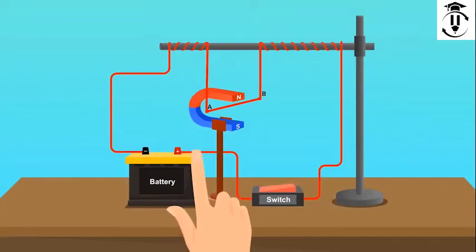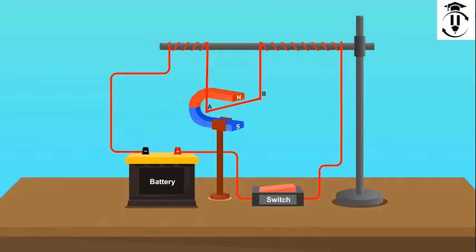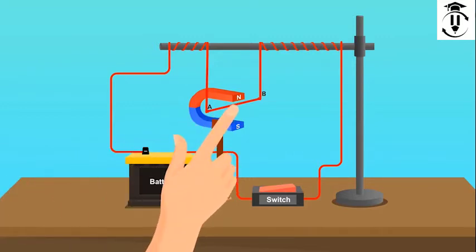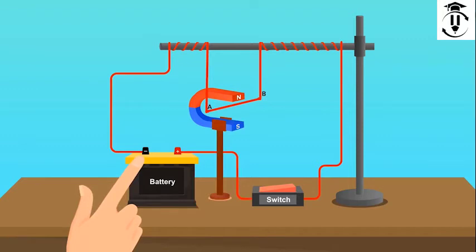First of all, put the horseshoe magnet on the stand such that the north pole should be vertically above the south pole. Hang the copper wire between the poles of the magnet with the help of the stand and connect its ends with the positive and negative terminals of the battery.